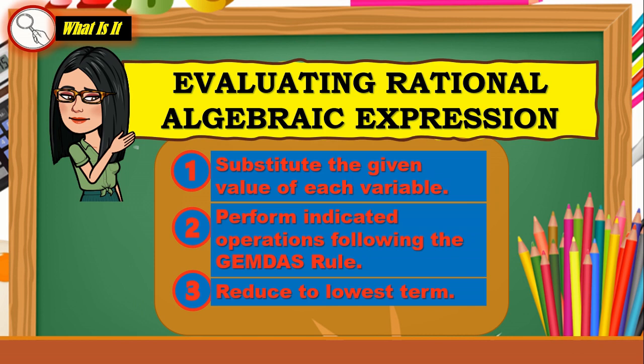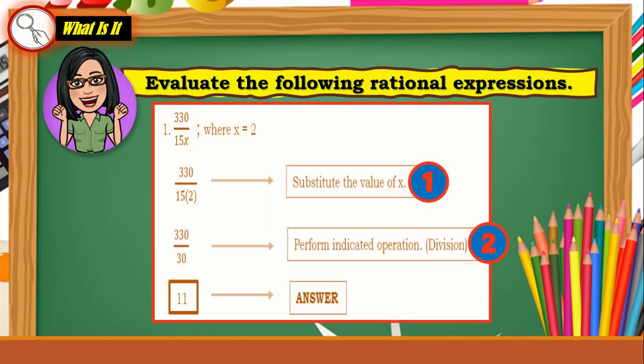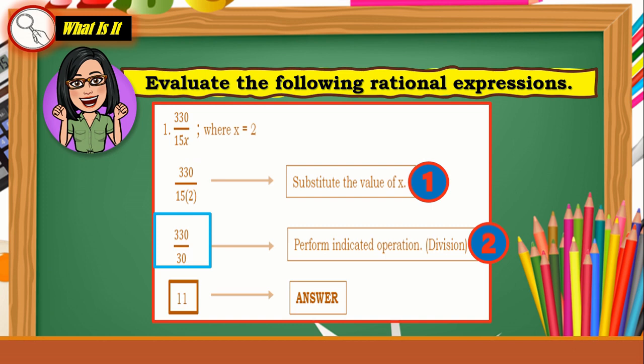Now let us try some examples. Evaluate the following rational expressions. Our given is 330 over 15X, where X equals 2. Step 1: substitute the value of X, which is 2. Step 2: perform the indicated operation, which is division. 330 divided by 30 equals 11. That is our answer.